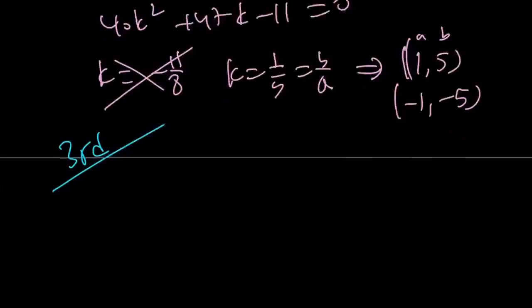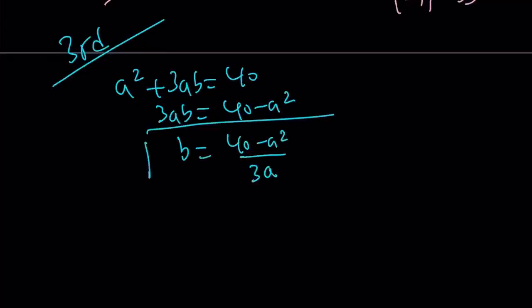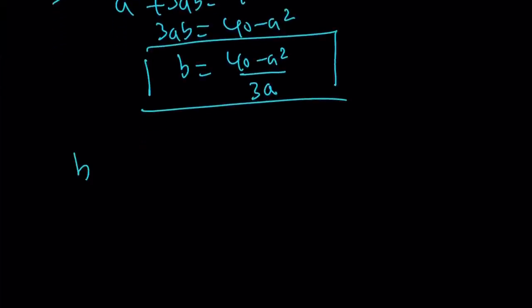The third method is as follows. I have a squared plus 3ab equals 40. Let's isolate 3ab, write it as 40 minus a squared, and then divide both sides by 3a. If you think I'm isolating b, you got it. Yes, this is b in terms of a. The other equation is b squared plus 2ab equals 11. I can just replace b with that. It's not going to be very pleasant, but it's a solution.